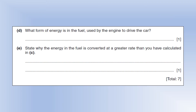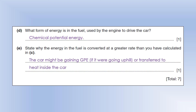What form of energy is in the fuel used to drive a car? If it's petrol or diesel, it's going to be chemical potential energy. Why is the energy in the fuel converted at a greater rate than calculated? The car might be gaining GPE if it's going uphill. Or it could be transferred to heat inside the car — our model included friction and drag outside the car, but inside the car there are all sorts of energy transfers, and energy might be transferred to heat internally.